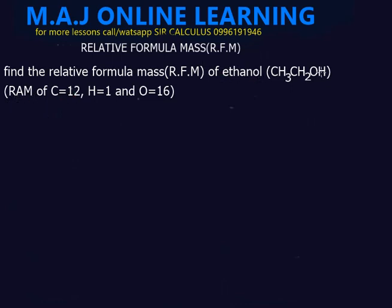So we have the chemical formula CH3CH2OH. To find the relative formula mass, we need to count how many of each atom we have in the formula. Looking at carbon, we have 2 carbons total, and the atomic mass of carbon is 12.